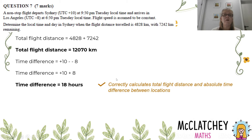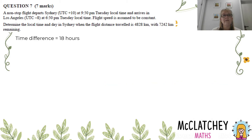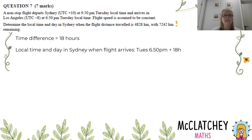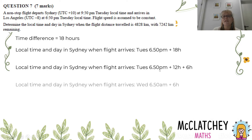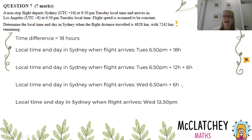With the 18-hour time difference between Sydney and Los Angeles established, let's work out the local time and day in Sydney when the flight arrives. It left Sydney at 9:50 pm. I'll take the Los Angeles arrival time of 6:50 pm Tuesday and add 18 hours. I like to break that into 12 hours — switching 6:50 pm to 6:50 am the next day — then add 6 more hours. So the Sydney time when the plane arrives in Los Angeles is Wednesday 12:50 pm.